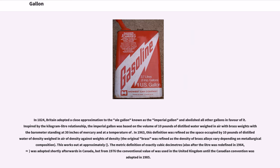In 1824, Britain adopted a close approximation to the ale gallon known as the imperial gallon and abolished all other gallons in favor of a definition inspired by the kilogram-liter relationship. The imperial gallon was based on the volume of 10 pounds of distilled water weighed in air with brass weights, with the barometer standing at 30 inches of mercury. In 1963, this definition was refined as the space occupied by 10 pounds of distilled water of a specified density, weighed in air against weights of a specified density, as the density of brass alloys varied depending on metallurgical composition. The metric definition of exactly a set number of cubic decimeters was adopted in Canada shortly after the liter was redefined in 1964, and from 1976 a conventional value was used in the United Kingdom until the Canadian convention was adopted in 1985.